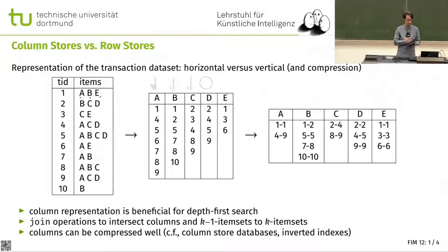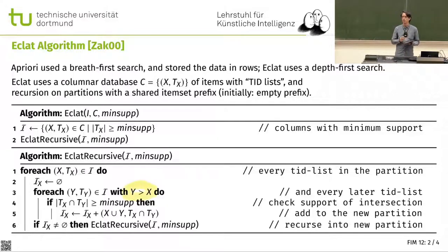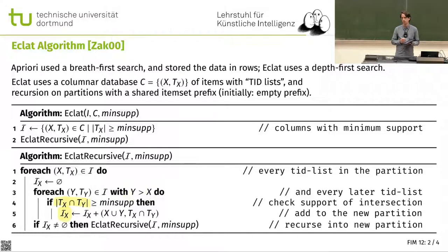Based on these one-item sets, we now look at all combinations of them. We don't want to do them twice, so we're not combining i with a and then a with i — we only combine when y is larger than x, which avoids duplicate work. Then we compute the intersection of them. If the intersection satisfies our minimum support, we add it to our output at this level. If we have a non-empty set of output, we do a recursion.